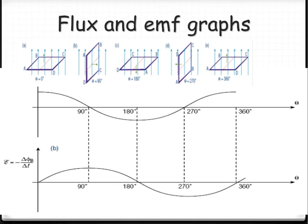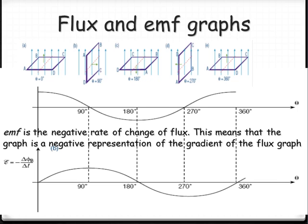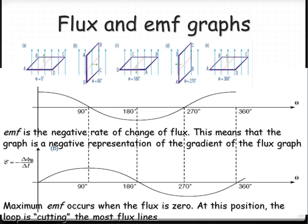For those who'd like to think of it mathematically, the EMF is the negative rate of change of flux — essentially a derivative. The maximum EMF occurs when we have zero flux, because that's when the coil is cutting the most field lines at that point.